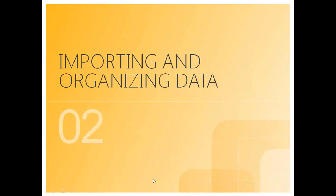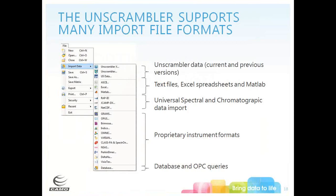Now we want to get into importing and organizing the data we want to work with. The Unscrambler supports many import file formats. Going to File, Import Data, you'll see formats including Unscrambler data formats from current and previous versions, text files, Excel spreadsheets, MATLAB data, universal spectroscopic and chromatographic data formats, and many different proprietary instrument formats.